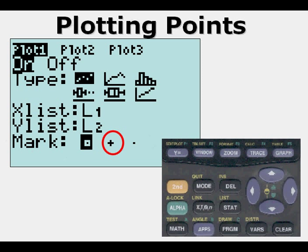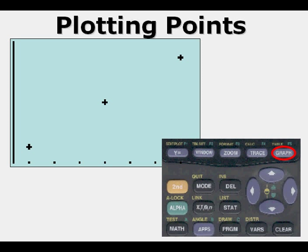What we're going to do is change the mark to the plus sign. We just arrow over and press enter, and so the plus sign is now going to be our default value. So we're going to go to our graph and we can see that we have plus signs where we had little squares before.